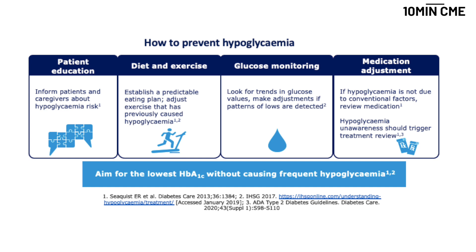We should educate patients about ways to prevent hypoglycemia, including the timing of diet, the timing of insulin, and the timing of exercise — which should not be done immediately after injection. Glucose monitoring is very important to understand and prevent hypoglycemia, and adjustment to medication may be required when hypoglycemia occurs. The aim is to achieve the best reduction in HbA1c without causing hypoglycemia.